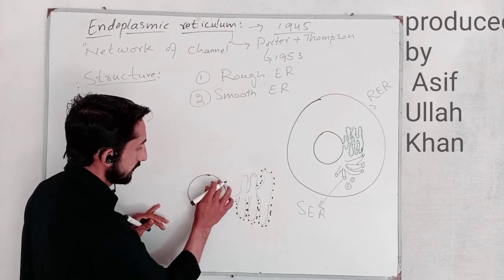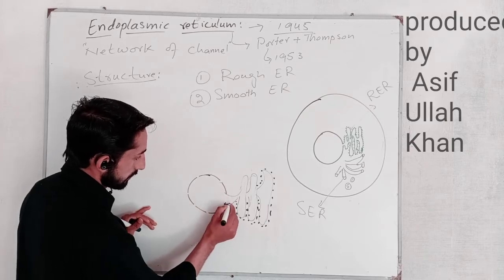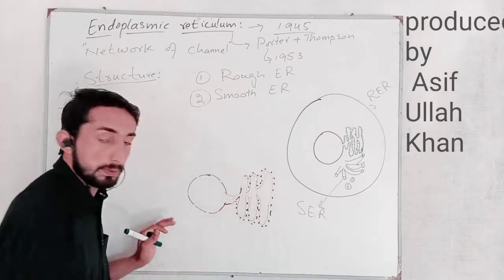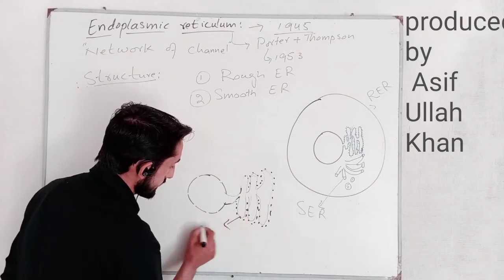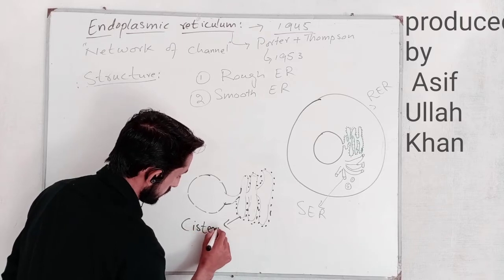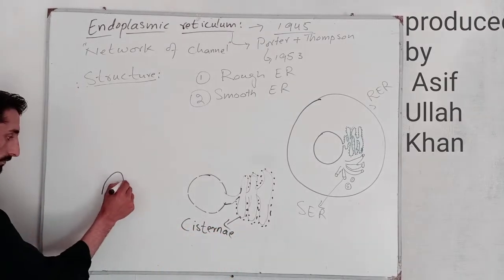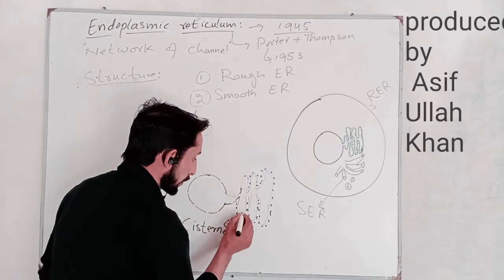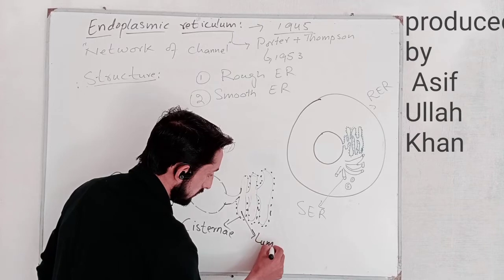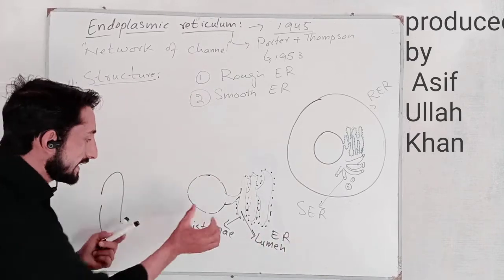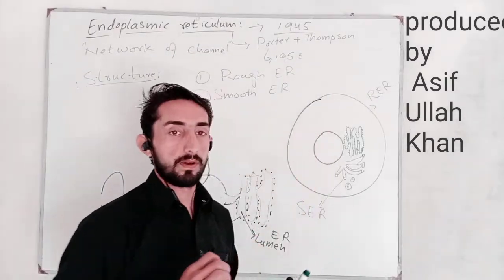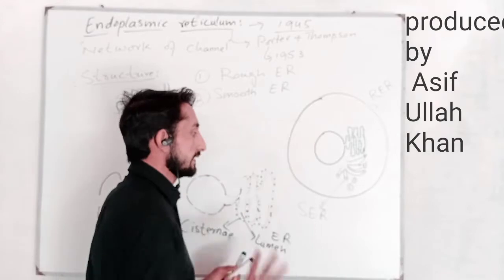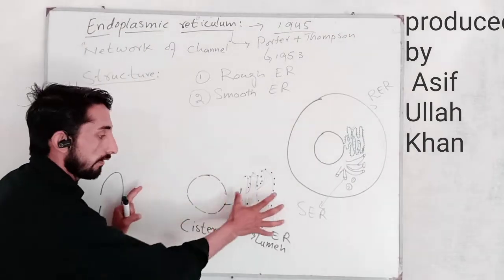This is the nucleus, and these are the nuclear pores. The endoplasmic reticulum starts from the nucleus. The flattened disc-like structures are called cisternae. The inner portion of the cisternae is called the lumen. This cisternae separates the lumen of the endoplasmic reticulum from the cytoplasm and cytoplasmic materials. So this is the structure of the rough endoplasmic reticulum.